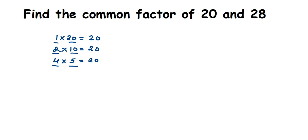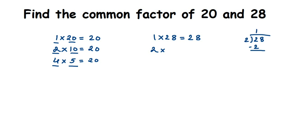Now let's find the factors of 28. Starting with 1: 1 × 28 = 28. Since 28 is an even number, it goes in the 2 table. Since 2 × 10 = 20 and 28 is bigger, we can just divide: 28 ÷ 2. 2 goes into 2 once with remainder 0, then bring down 8 — 2 × 4 = 8, remainder 0. So 2 × 14 = 28.